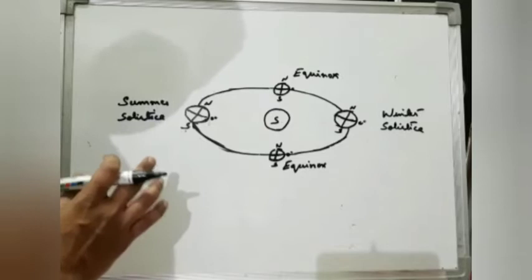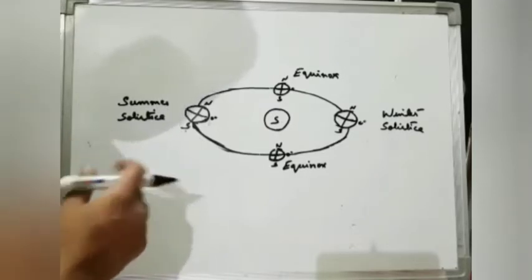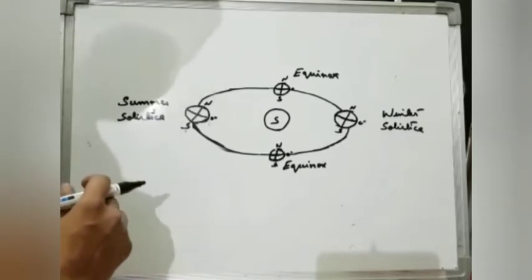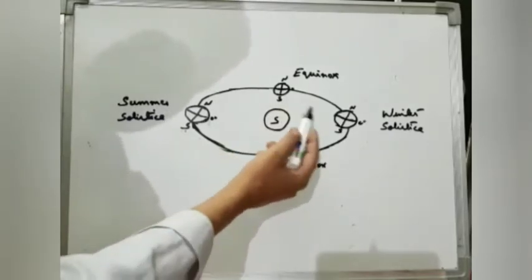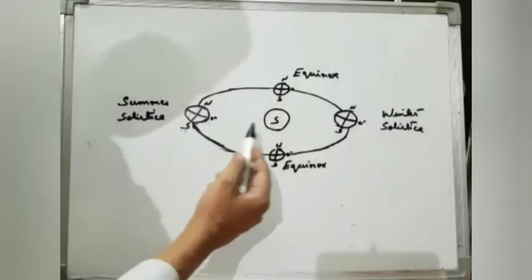So look at here, this is the diagram of the revolution of the Earth. There are four phases of the Earth. Out of these four, these two phases are very important.